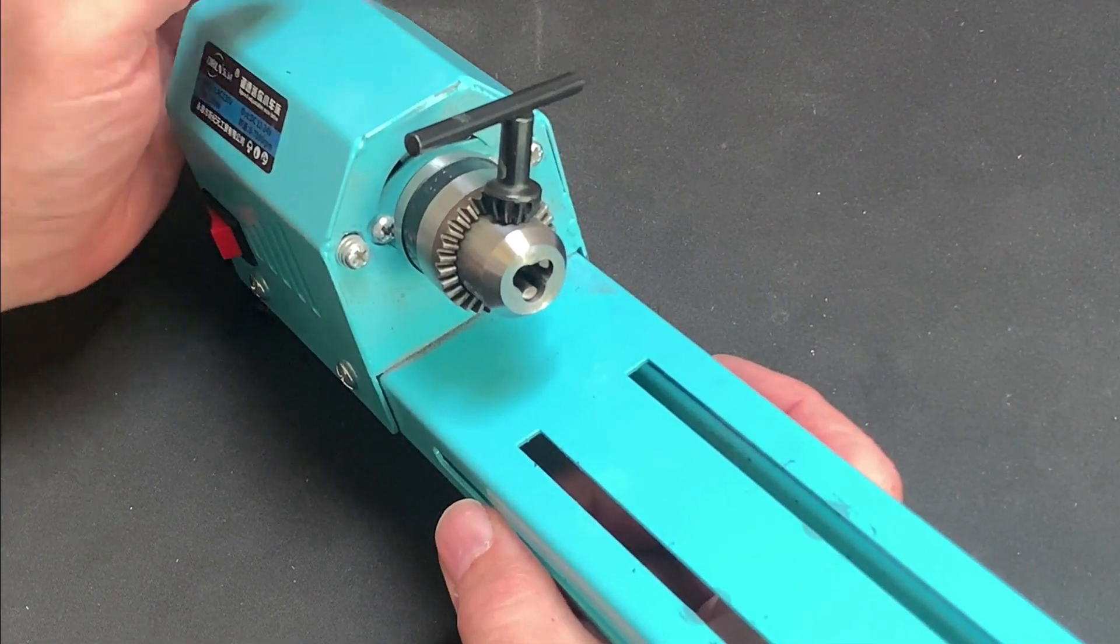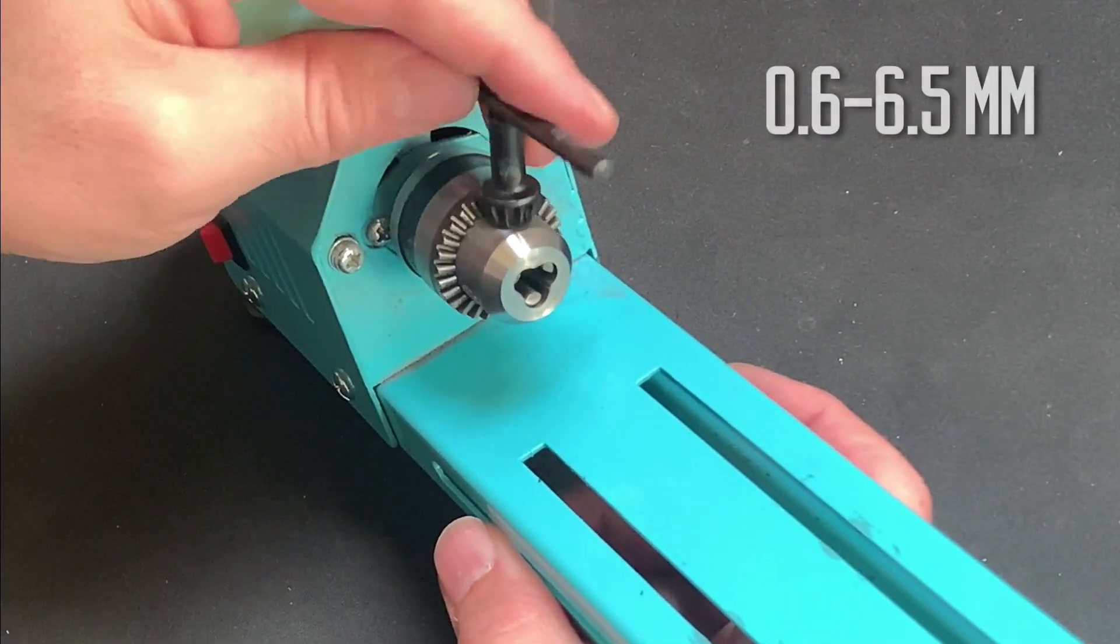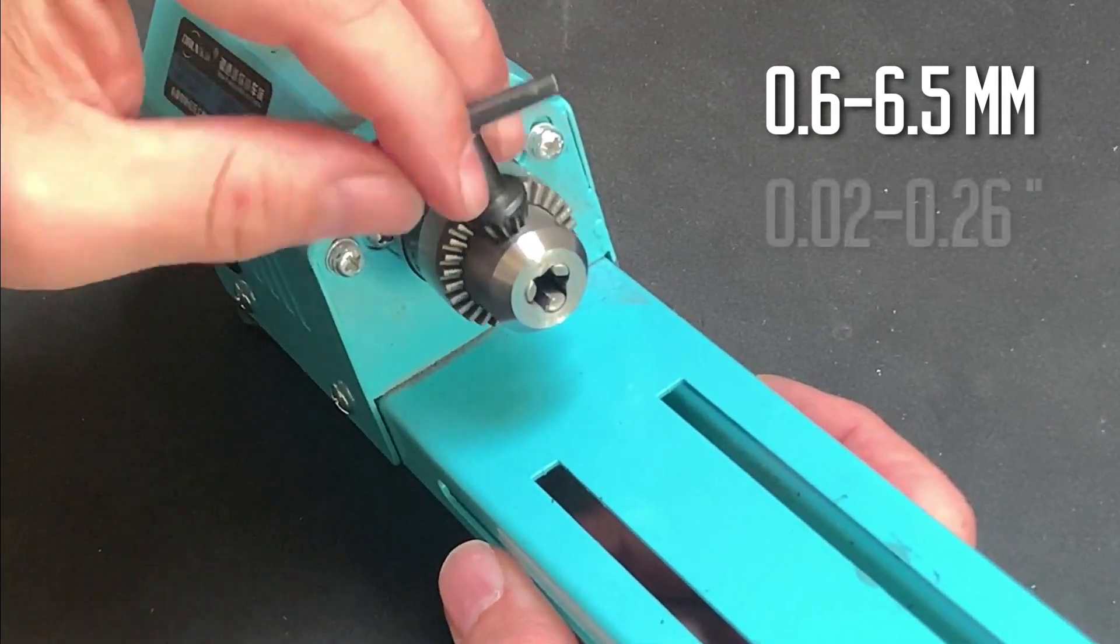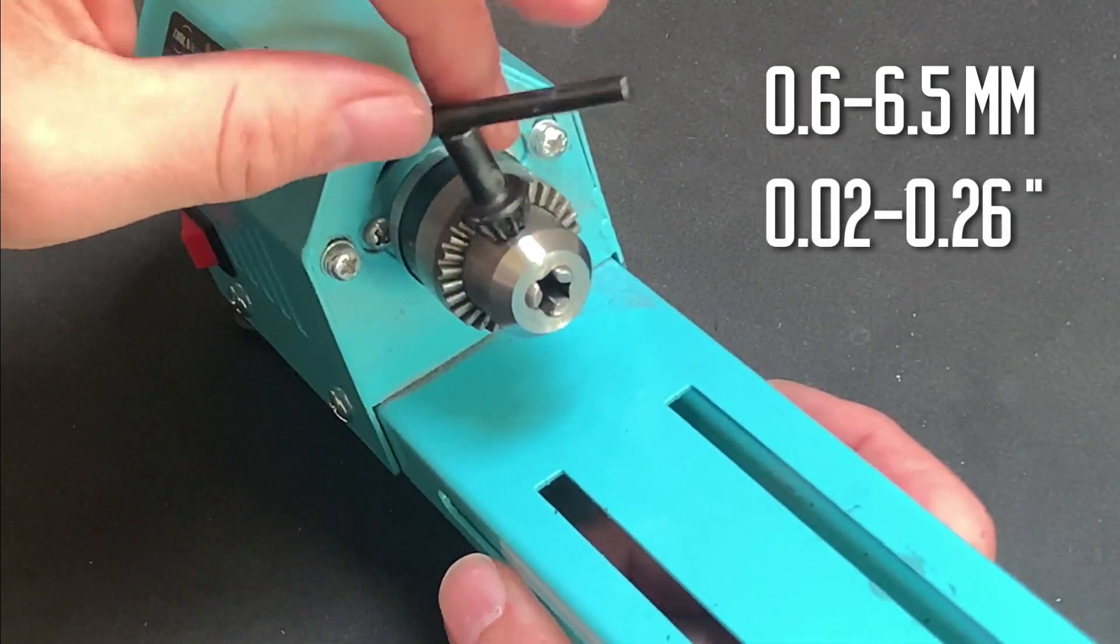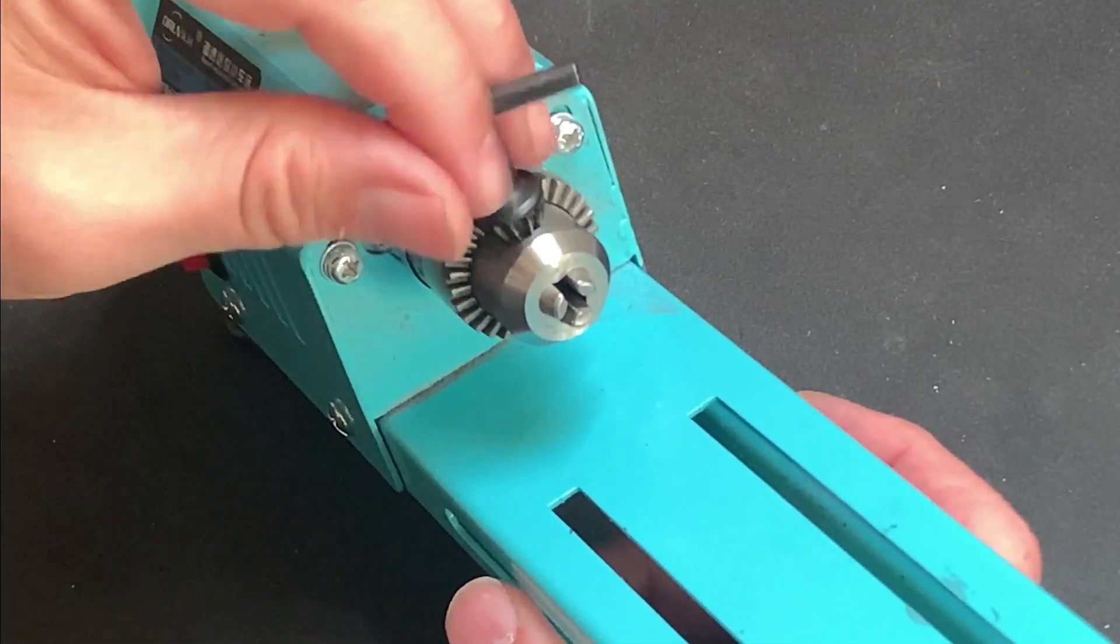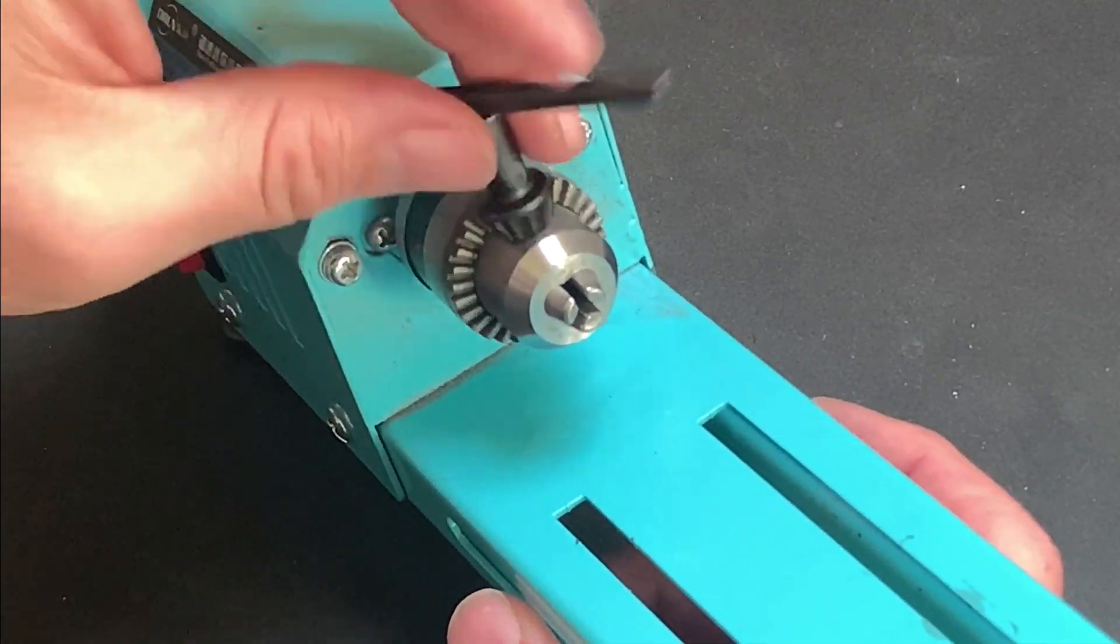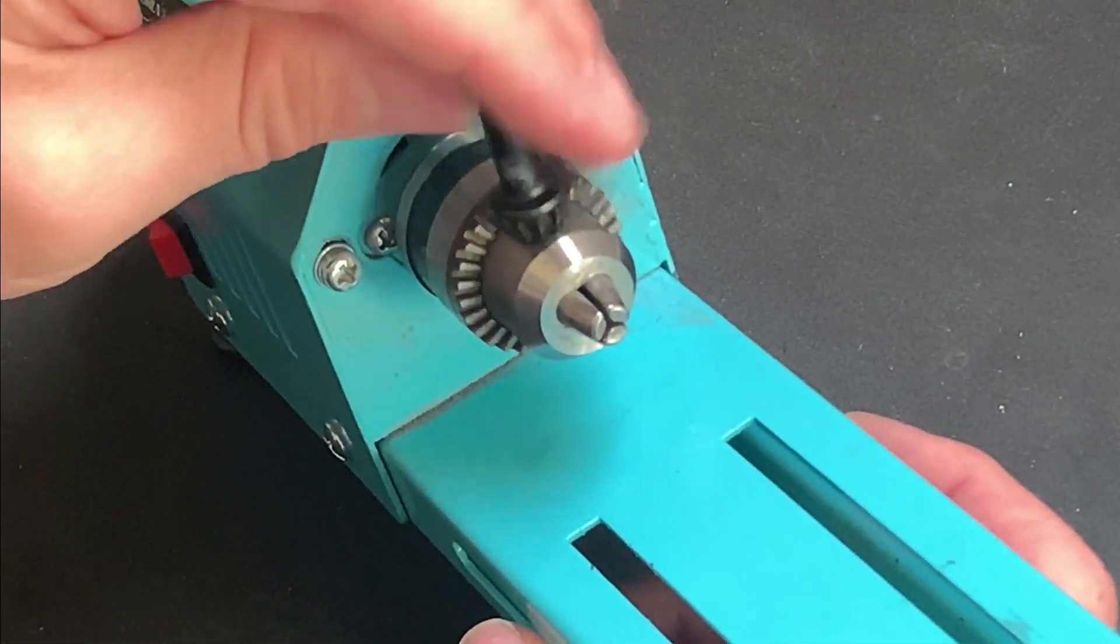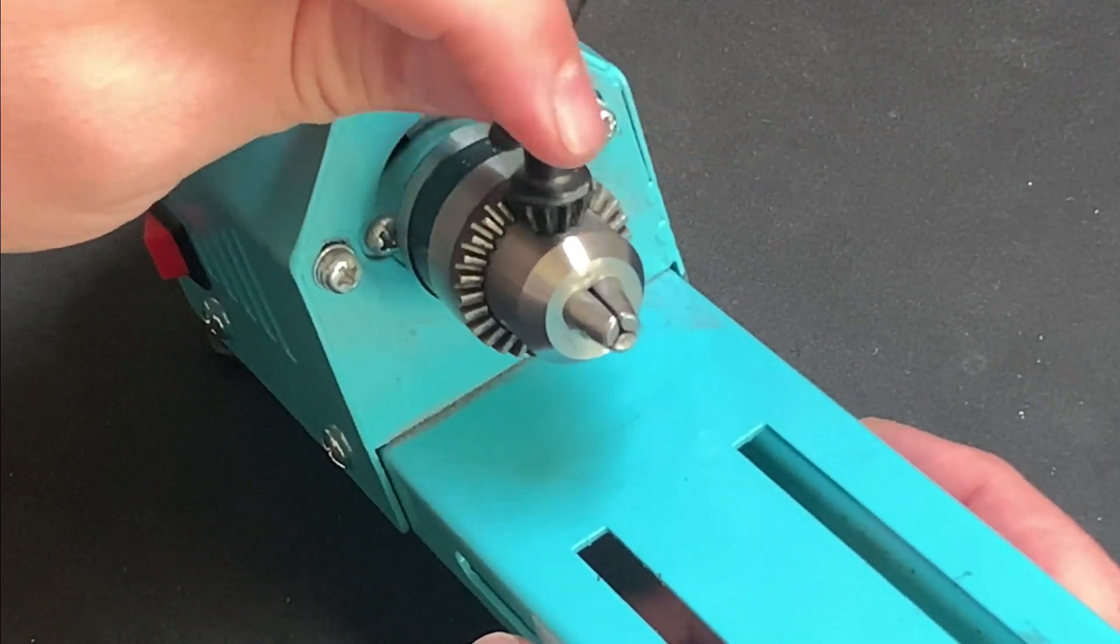The chuck is nicely tapered and caters for bits ranging from 0.6 to 6.5 millimeters, that's 0.02 to 0.26 inches. I found that this is more than sufficient for the bits and pin diameters we're likely to be working with, and the chuck key provided ensures that everything is held tightly when operating the lathe.